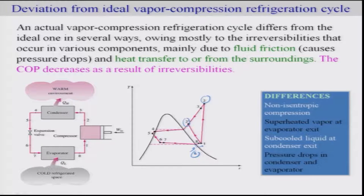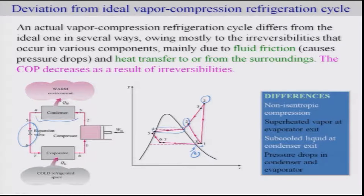There could also be a pressure drop across the condenser and pipes, so pressure may not remain constant. The refrigerant may also sub-cool at point 5, and there could be a pressure drop such that the condensed fluid does not reach the condenser pressure, exiting instead at points 6 to 7. This overall process clearly indicates a lot of irreversibility in the real cycle.